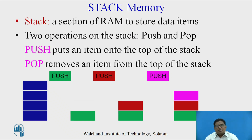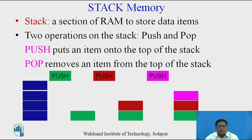Now, what is stack memory? Stack memory is a section of the main memory, that is the RAM, and this stack memory is used to store data items. Two operations are possible on the stack memory: one is called push and the second one is called pop. Push means to put an item onto the top of the stack, and pop means to remove an item from the top of the stack. So the stack memory is accessible only by these two special operations — push and pop.